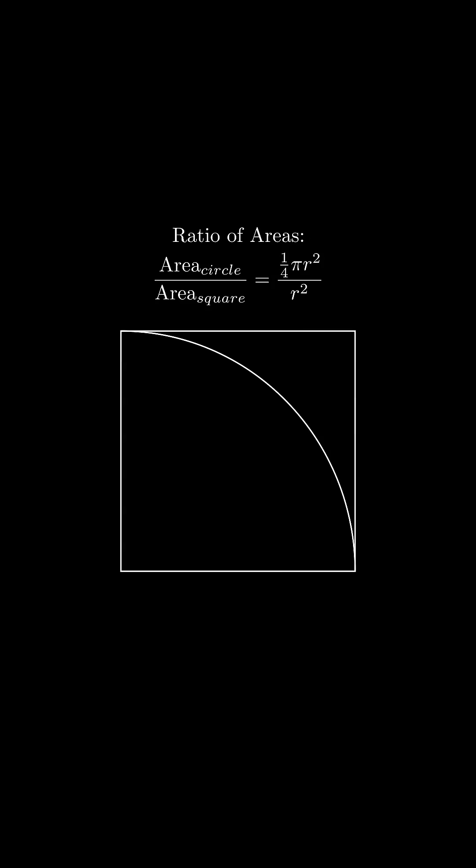Now, here's the key. Look at the ratio of the circle's area to the square's area. When you write it out, the r squared terms on the top and bottom perfectly cancel out. And what are we left with? Pi divided by 4.